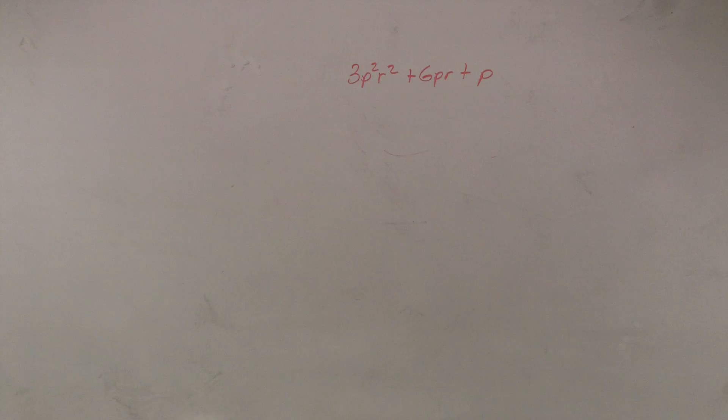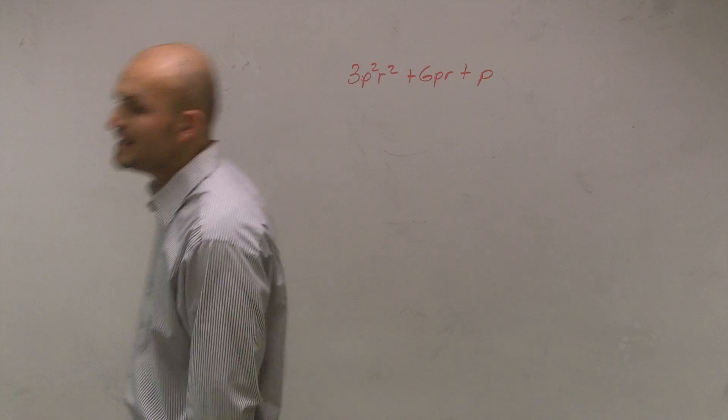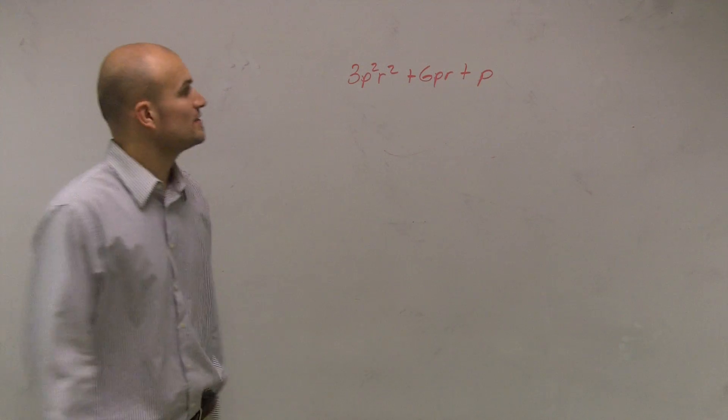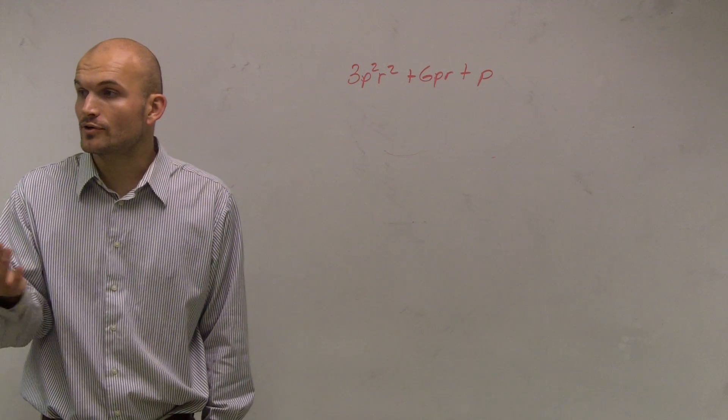So we have 3p squared r squared plus 6pr plus p. What we have to do for this problem is factor out the greatest common factor.